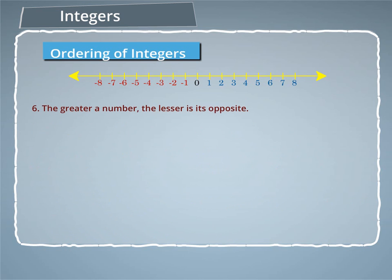6. The greater a number, the lesser is its opposite. For example, 6 is greater than 2, but minus 6 is less than minus 2.